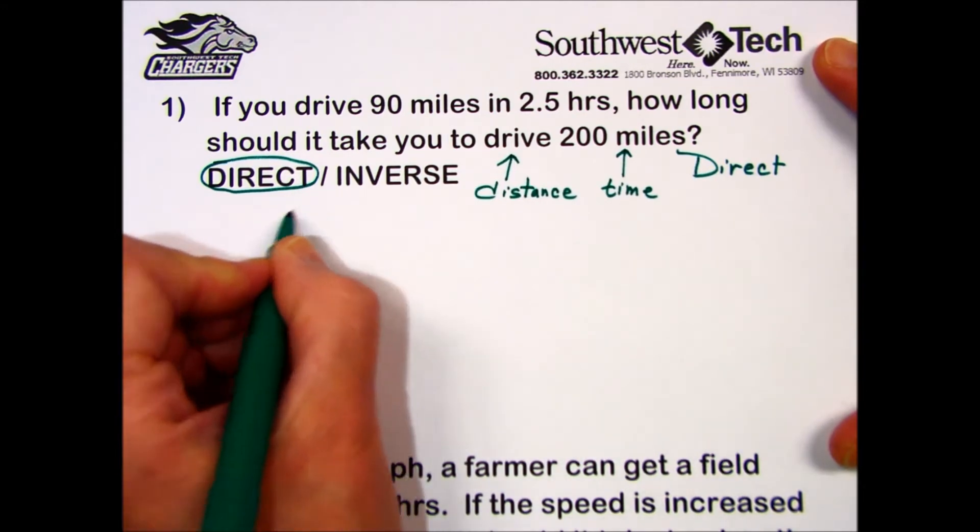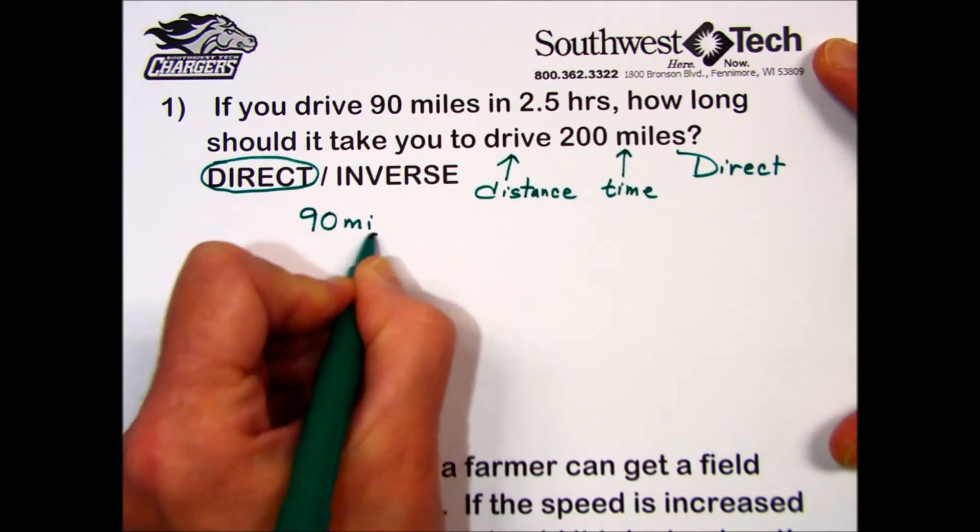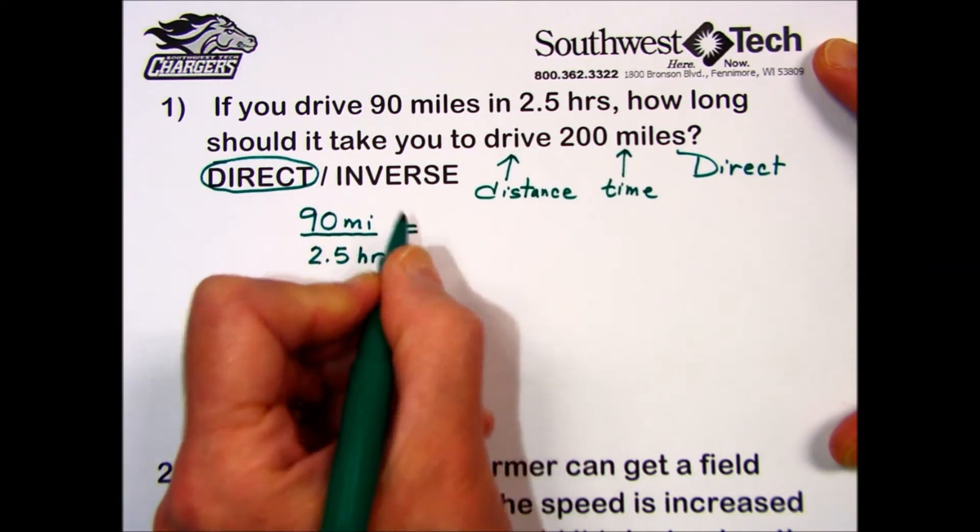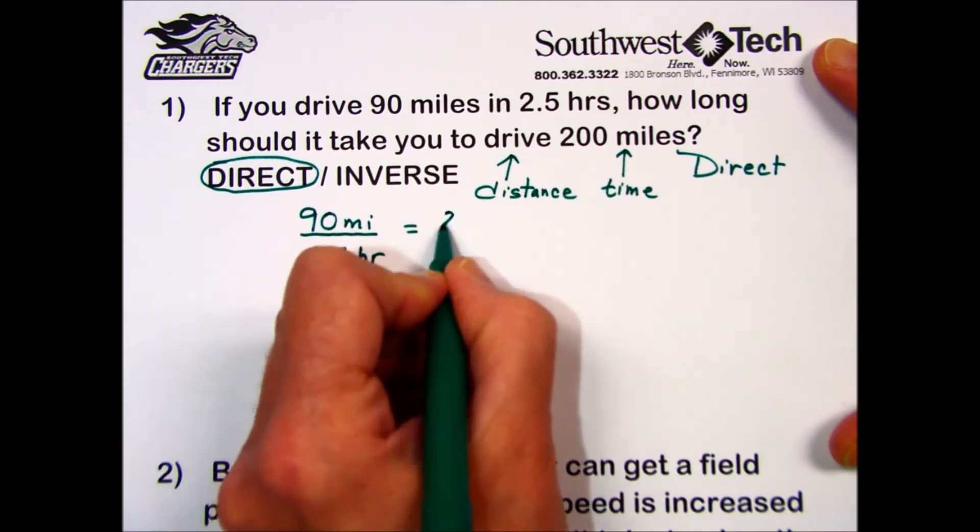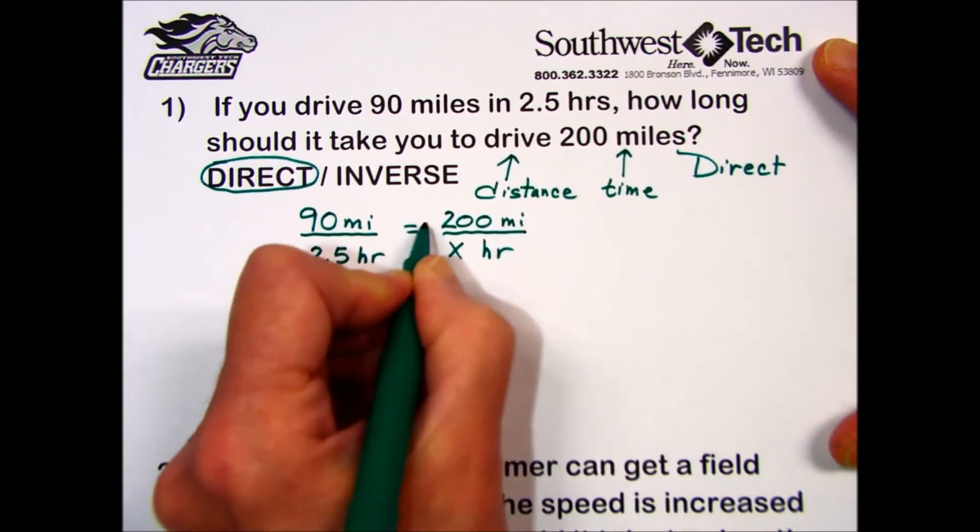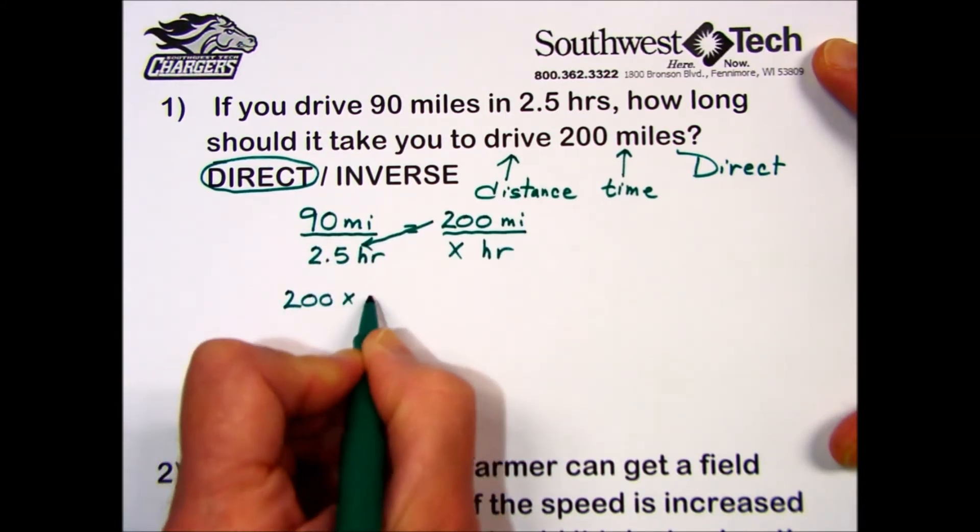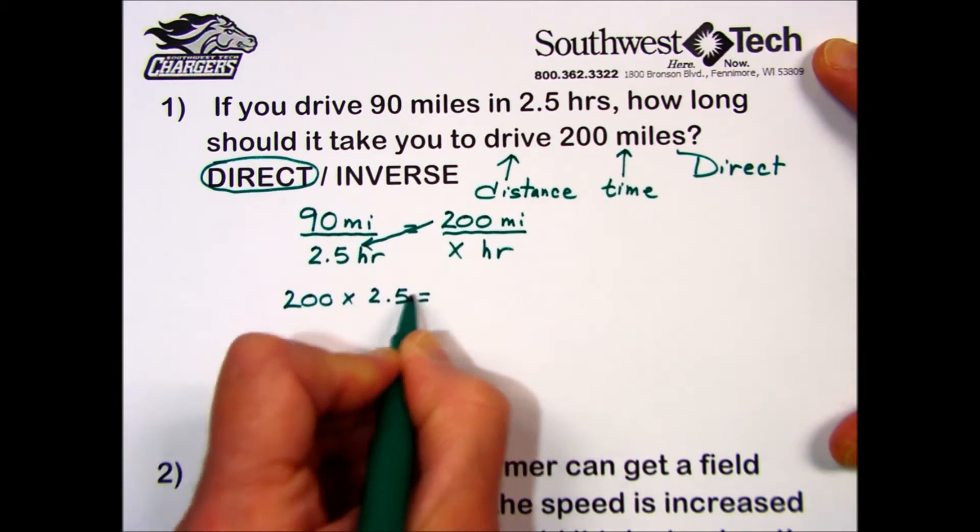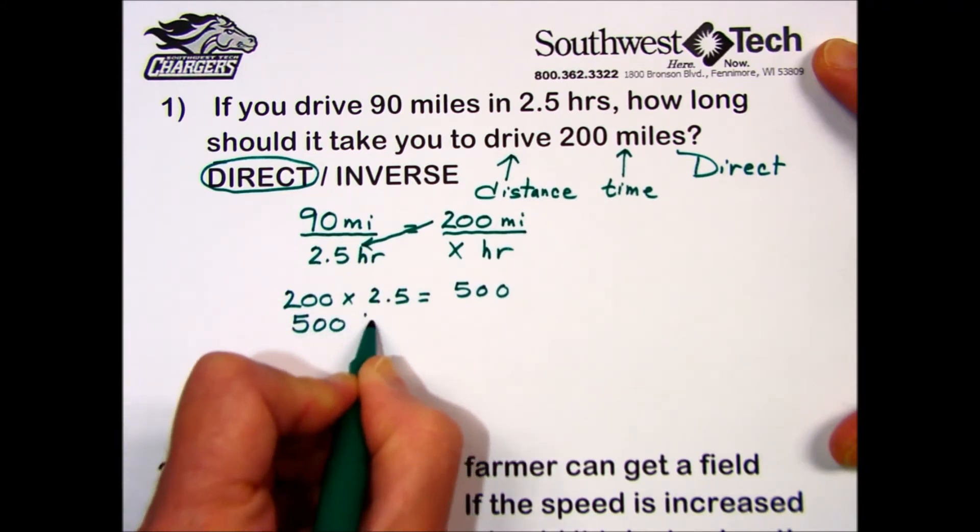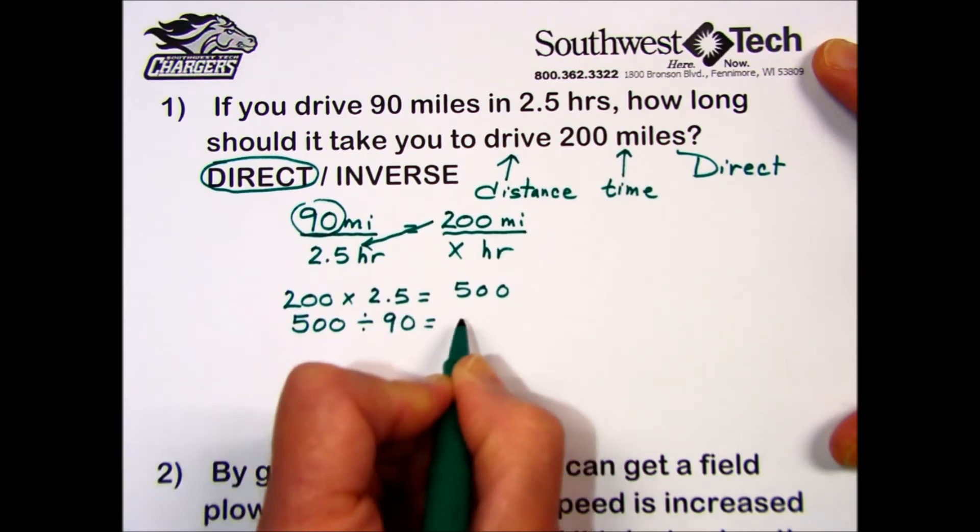Solving this, when we compare the original information, we have 90 miles traveled in 2.5 hours should equal the new situation, which is a distance of 200 miles and the unknown amount of time. Multiplying the diagonal using cross multiplication with the numbers in it, we're going to have 200 times 2.5 equals 500.